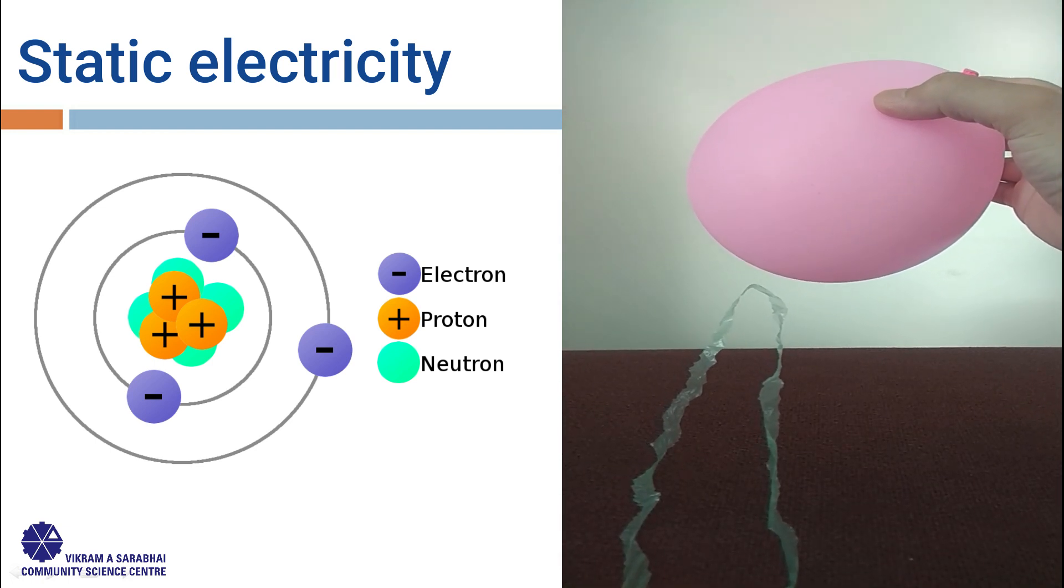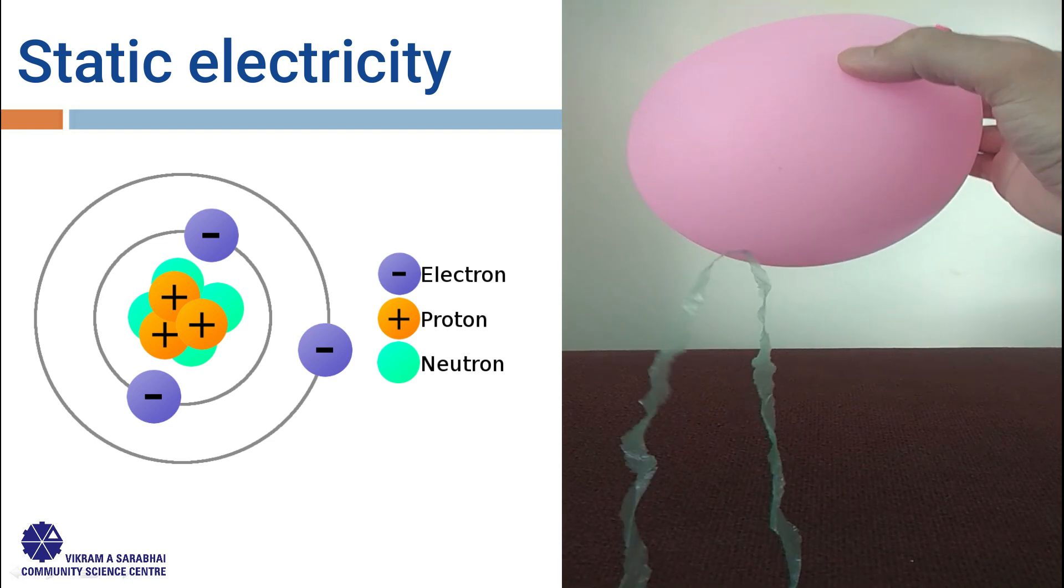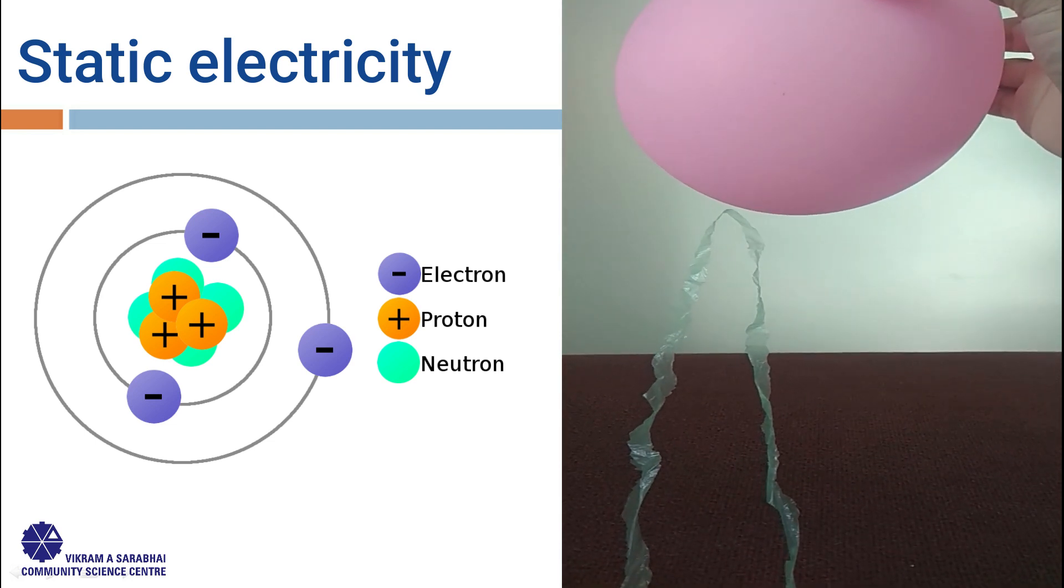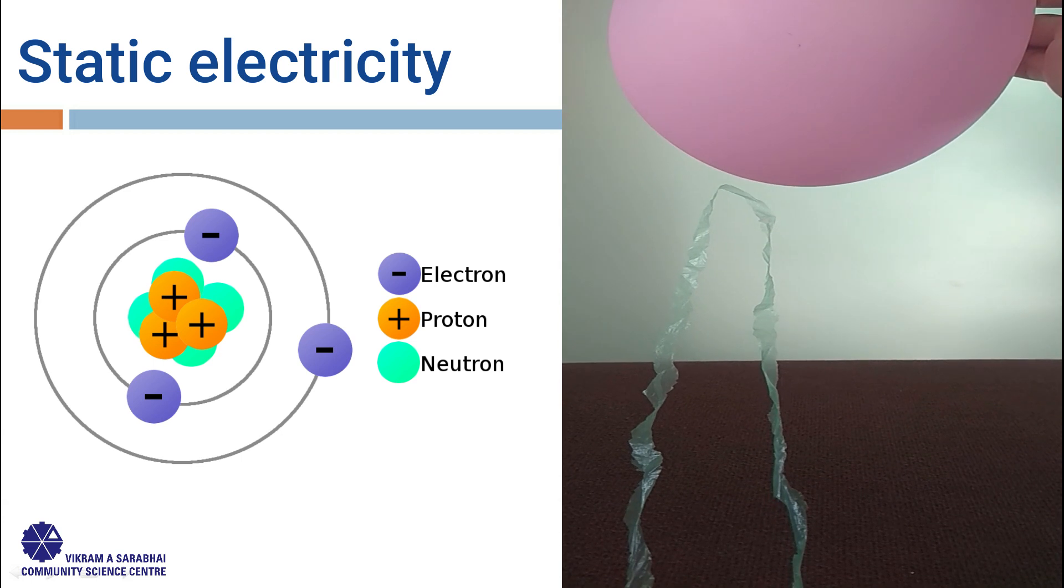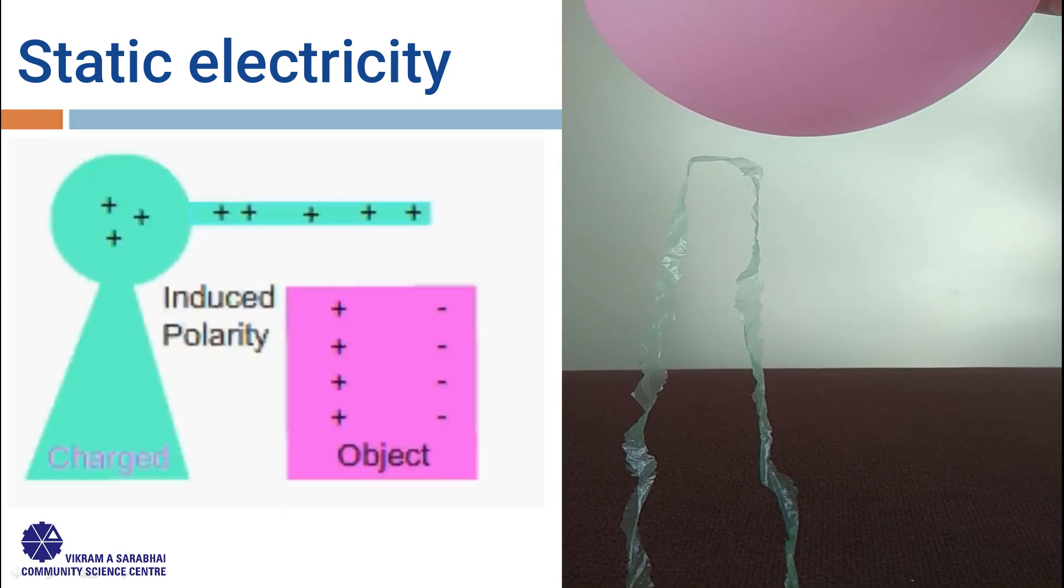Most of the time, an atom is neutral with the same number of protons and electrons. When an atom's proton and electron numbers are uneven, the electron dance begins.